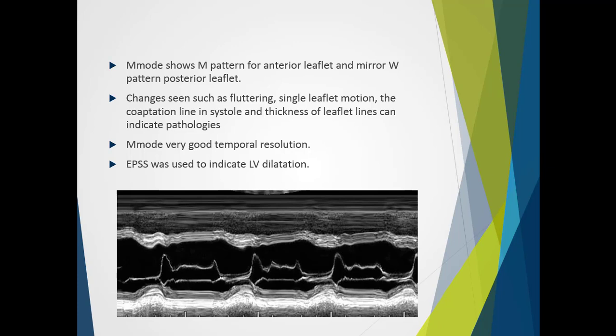M-mode shows a typical M pattern for the anterior leaflet and a mirrored W pattern for the posterior leaflet. The excursion of the anterior leaflet is much larger compared to the posterior leaflet. Changes seen such as fluttering, single leaflet motion, and the coaptation line being thicker in systole indicate pathologies. While not a significant part of the common scan these days, M-mode has a significant benefit in assessing timing events and has very good temporal resolution.